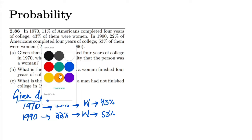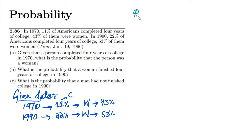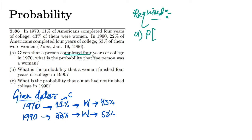Now let me write the required data. In part A, given that a person completed four years of college in 1970, what is the probability the person was a woman? This is a conditional probability — the condition is that the person has completed four years of college in 1970, and we need to find the probability that person was a woman.